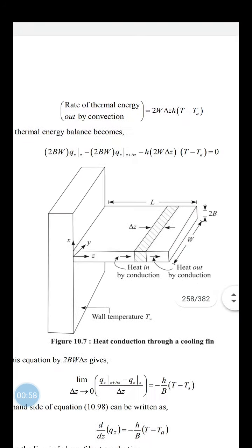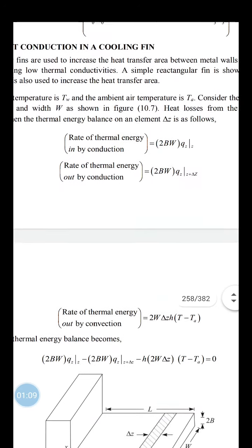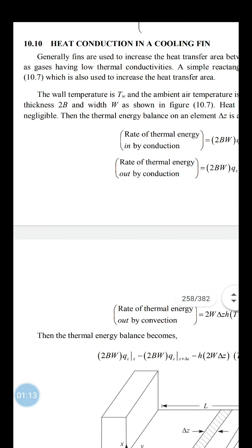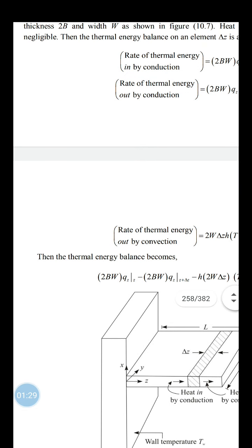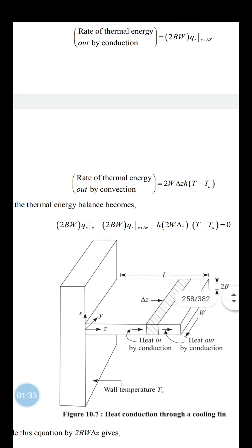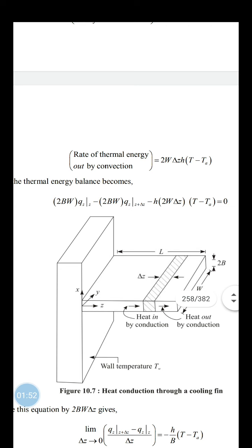A simple rectangular fin is shown in the figure — this is the surface and this is the rectangular fin. We are going to find out how heat conduction takes place through this fin. For heat transfer, the wall temperature is T_w, the ambient air temperature is T_a, the fin length is L, thickness is 2b, and the width is W. We assume heat losses from the end edges of the fin are negligible.